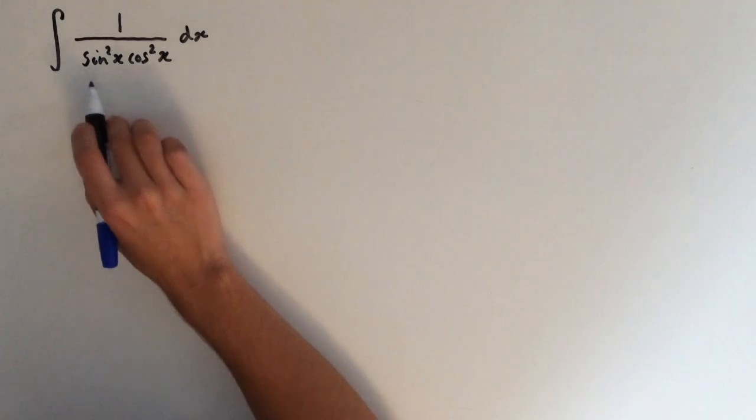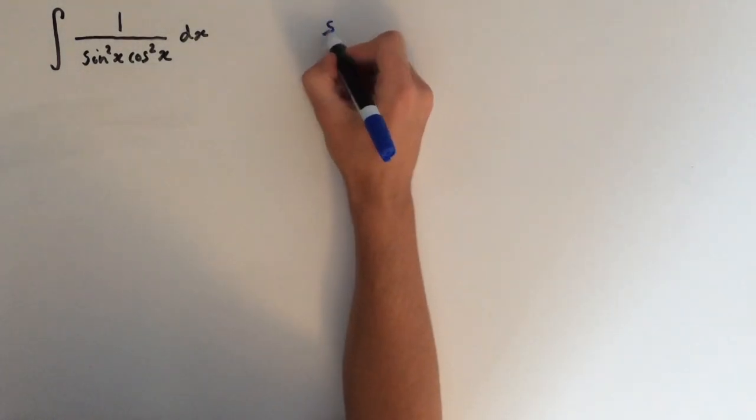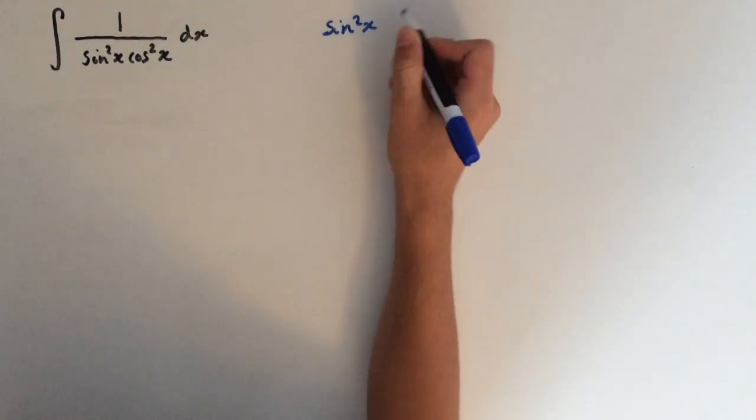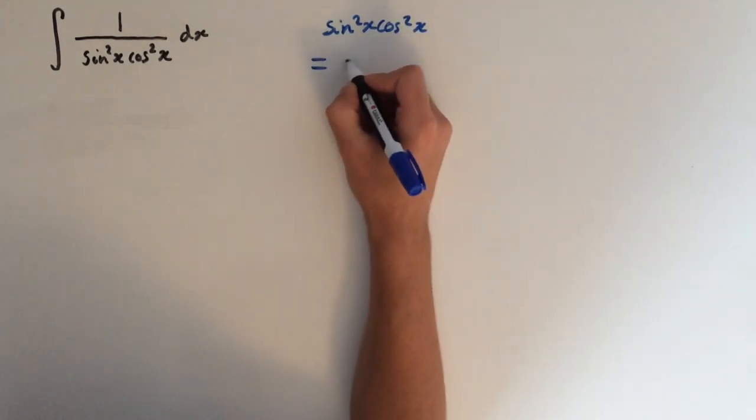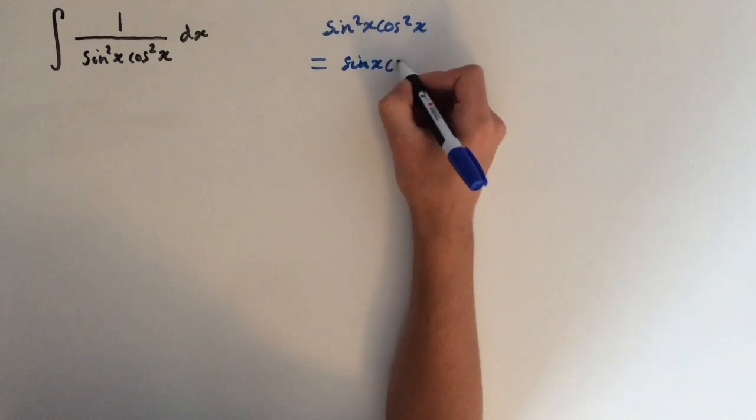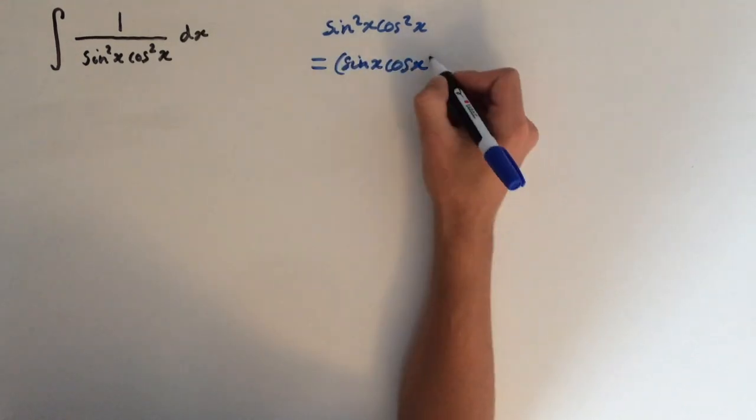So what we're going to do is look at the denominator. Sine squared of x times cosine squared of x. Now we can simplify this as sine of x times cosine of x all squared.